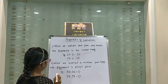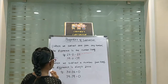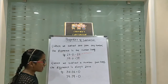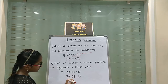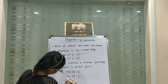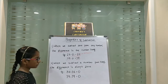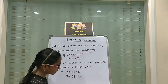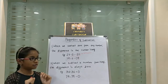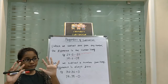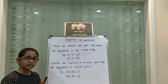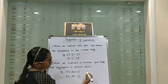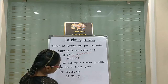Now let's move on to this one. When we subtract a number from itself, the difference is always 0. So, 36 minus 36 and 79 minus 79 is equal to 0. If I subtract 10 minus 10, there is none left — 10 minus 10 is 0. So, 36 minus 36 is 0. Any number minus itself is 0.